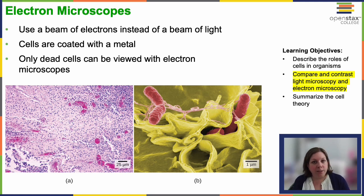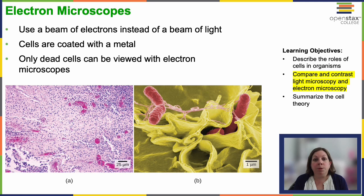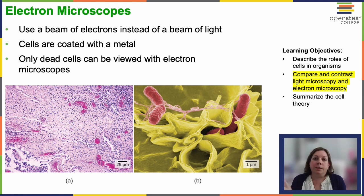Electron microscopy is a very specialized type that doesn't use visible light — it uses a beam of electrons to visualize your sample. This cannot be done on live cells; if you pass a beam of high-energy electrons through a live cell, it's going to die and probably burst apart if not prepared properly. Cells are fixed, meaning killed, and then stained with metal. The metal interacts with the beam of electrons, reflecting them back to form your image. Scanning electron microscopy gives that kind of three-dimensional look, where the sample is coated with metal and the electron beams bounce off of it.